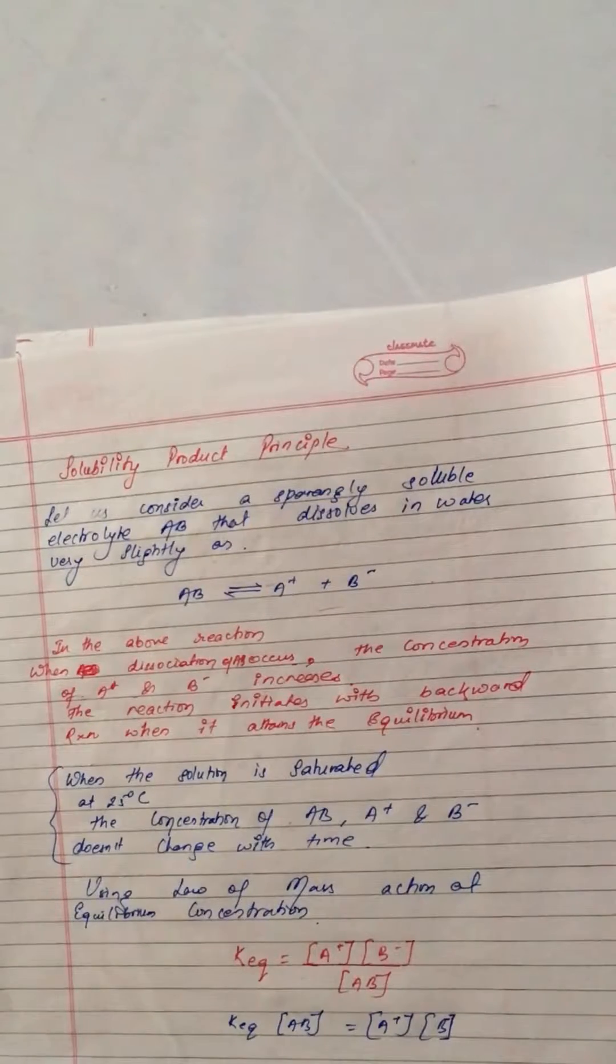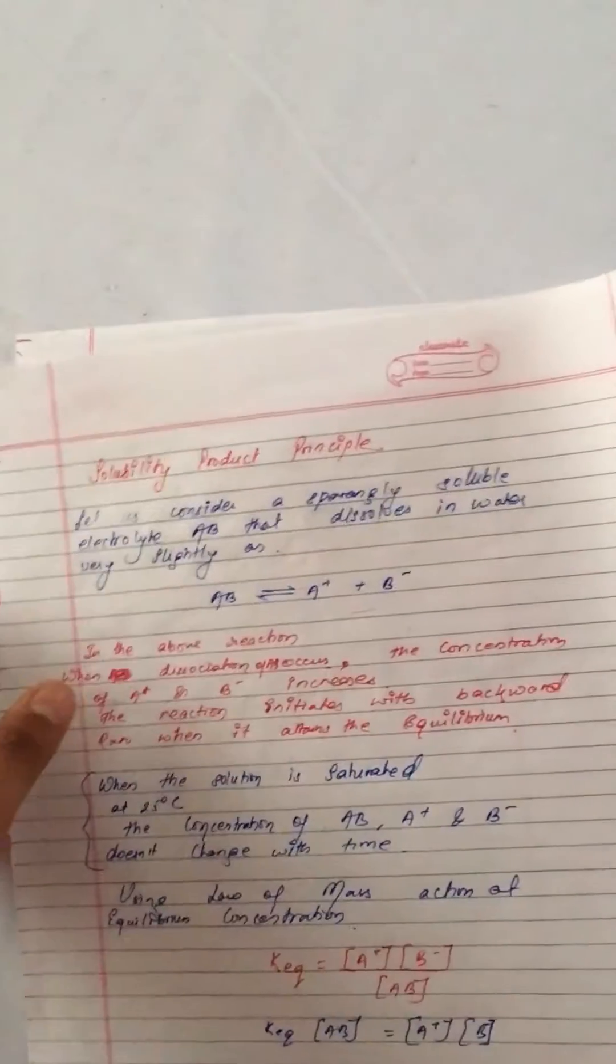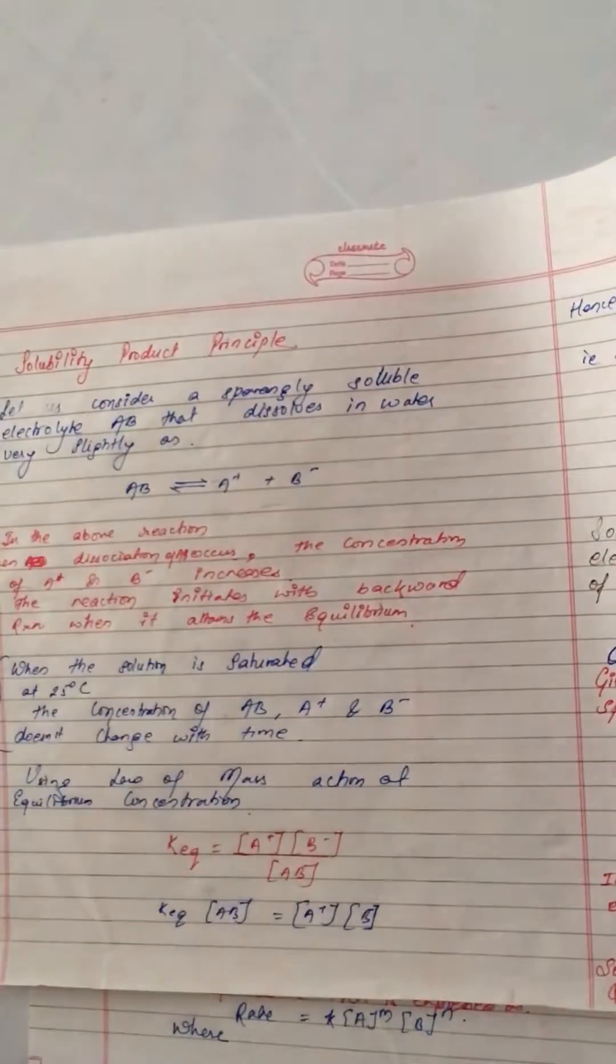Using the law of mass action, at equilibrium, the equilibrium constant KEQ equals A plus times B minus over AB. At equilibrium condition, AB is equal to A plus and B minus.